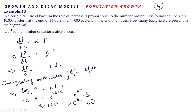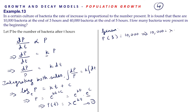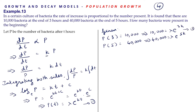At the end of 3 hours there are 10,000 bacteria and at the end of 5 hours there are 40,000 bacteria. So P(3) = 10,000 gives us 10,000 = lambda·e^(3k) — call this equation 2. And P(5) = 40,000 gives us 40,000 = lambda·e^(5k) — call this equation 3.